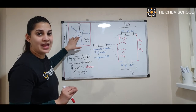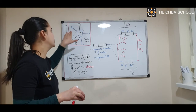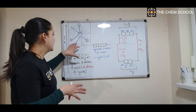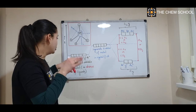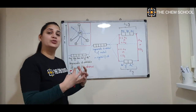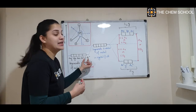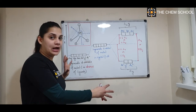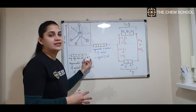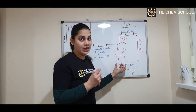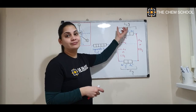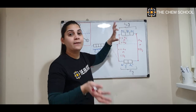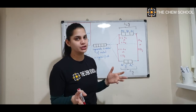In a tetrahedral complex, you have the central metal atom and in a regular tetrahedron the ligands are positioned around it. In this case, the ligands cause the dxy, dyz, and dxz orbitals to experience more repulsion compared to the dx²−y² and dz² orbitals. That is why, when splitting occurs, your dx²−y² and dz² — that is, your eg orbitals — will have less energy, while your t2g orbitals will have more energy, because they experience more repulsion.